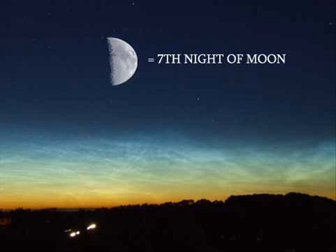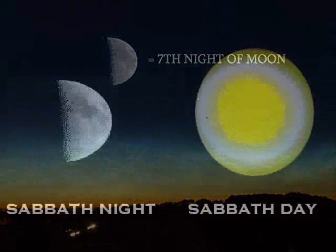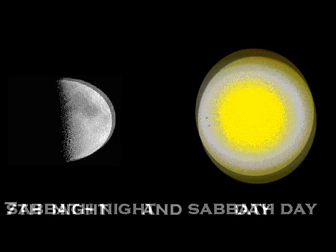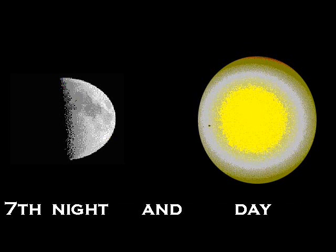So here is the true way of following the Sabbath based off the appointed times of Jehovah using the moon. The Sabbath is divided into two halves: the Sabbath night and the Sabbath day. I have a documentary called Following the Sabbath in Truth where I explain the Sabbath and how it is observed, so stay tuned for that.